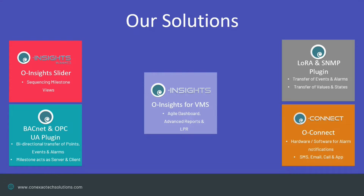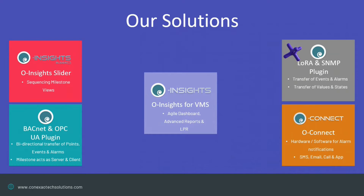This is the overall solution we have. We have the OInsight slider, which is a carousel view for sequencing Milestone views. The BACnet OPC plugin enables bi-directional transfer of alarms and events with any SCADA supporting these protocols. We have the LoRa WAN SNMP plugin — any UPS traps, hard disk failures, all those traps can come inside Milestone. From a LoRa WAN perspective: smart cities, smart bins, panic alarms — anything battery-operated with the LoRa WAN protocol can feed information in. We have O Connect for sending notifications externally — loitering alarms, camera failures — as SMS, email, app, WhatsApp, or even a call.